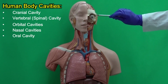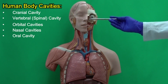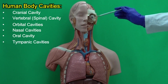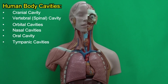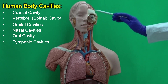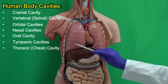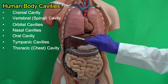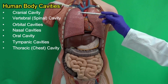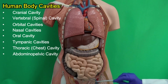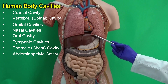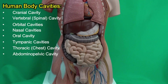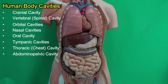In the facial region, we have two orbital cavities — obviously, eyeballs are located there. We have two nasal cavities, one oral cavity, and deep inside, we also have tympanic cavities, which include some of our ear structures. When we get to the trunk, we have the chest or thoracic cavity, which is separated from the largest cavity in our body by a muscle named the diaphragm. The diaphragm is the partition between the thoracic cavity and the abdominal pelvic cavity, which extends from the diaphragm to the groin.